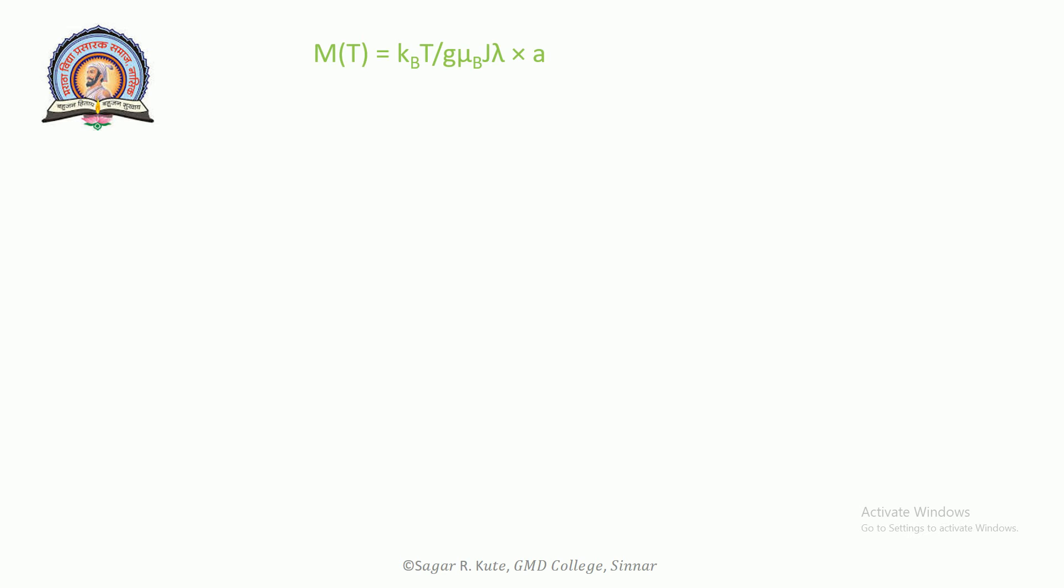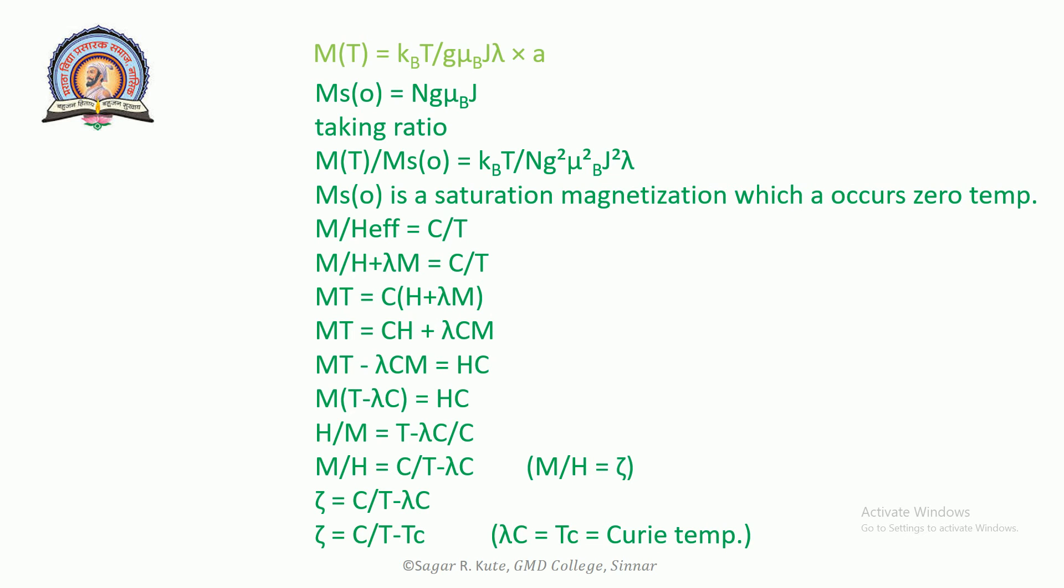Let us define saturation magnetization at zero temperature. Ms(0) equals N g mu_B J. Taking the ratio M(T) over Ms(0) equals k_B T over N g mu_B J squared lambda. Ms(0) is the saturation magnetization which occurs at zero temperature.